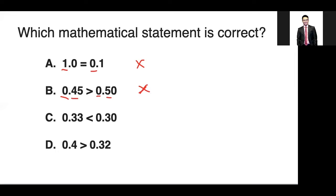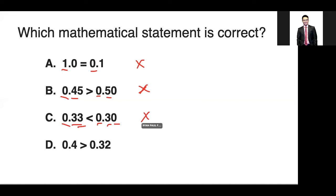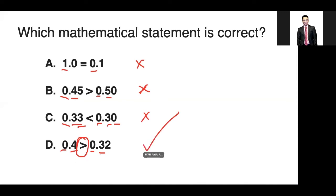The next statement is 0.33 is less than 0.30. The first digit is 0, the same; we proceed to the next digit which is 3, also the same. But the last digit is 3 versus 0, and 3 is greater than 0, which means this statement is also incorrect. Finally, the last statement is 0.4 is greater than 0.32. Comparing 4 and 3, since 4 is greater than 3, this is the correct statement.